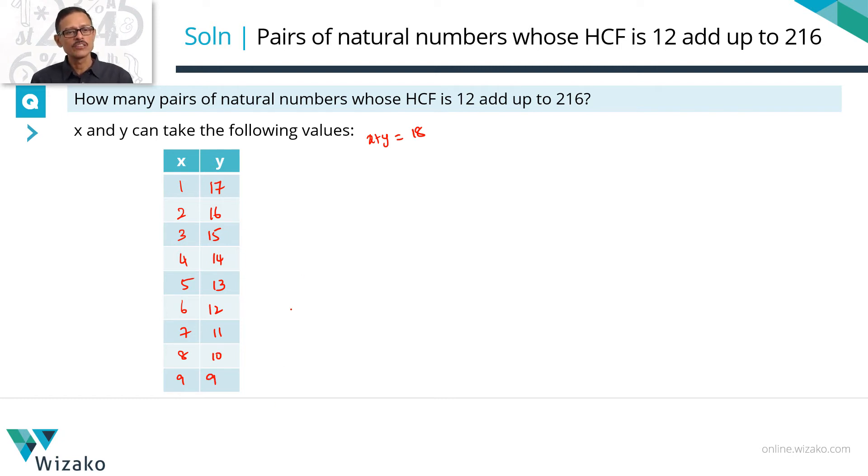These are all the 9 sets of values for which x plus y will add up to 18. Y plus x is the same as x plus y, we are looking at pairs of numbers, we are not looking at ordered pairs. So 10 and 8 is the same as 8 and 10, you don't need to worry about it.